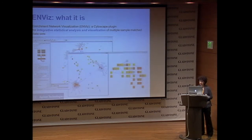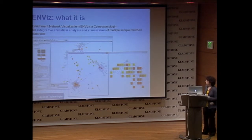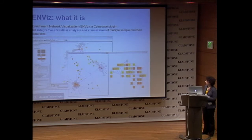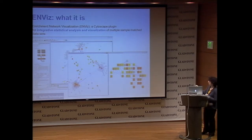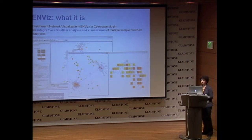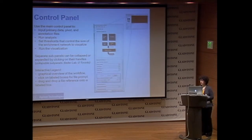For GO enrichment, we actually do two types of visualization. On the left is the same bipartite graph. On the right is a more traditional gene ontology directed graph or tree, where the gene ontology nodes are colored by the cumulative enrichment across different pivot terms.